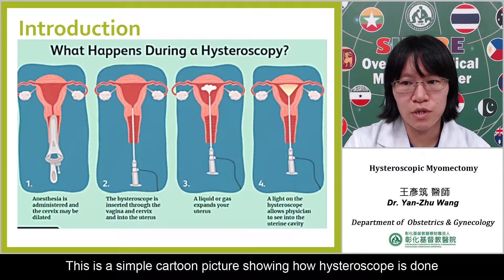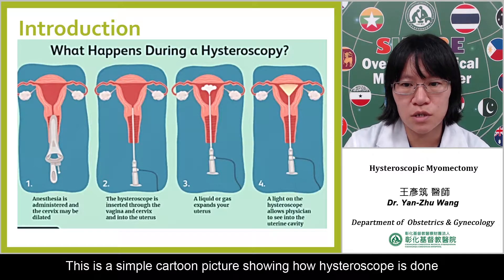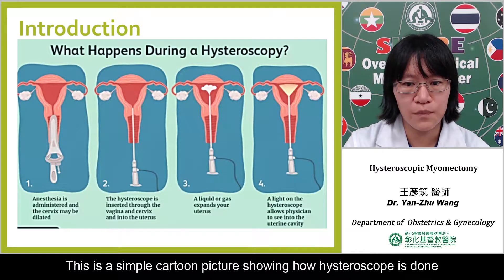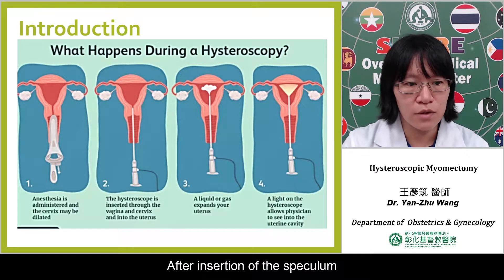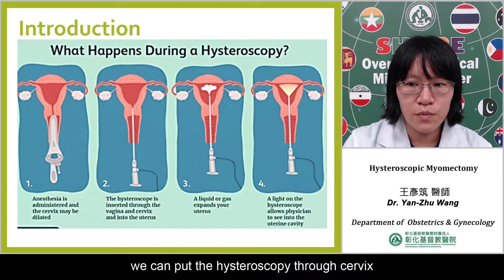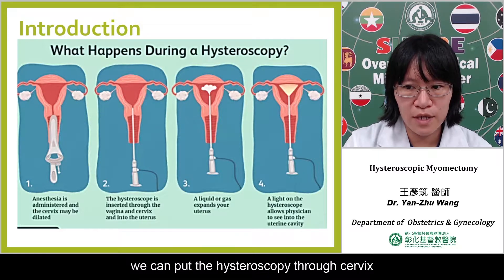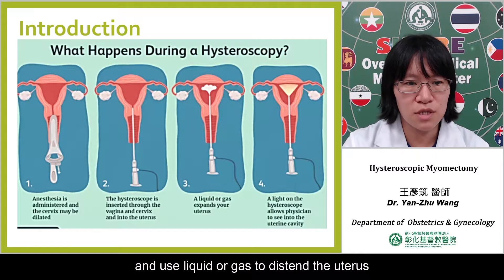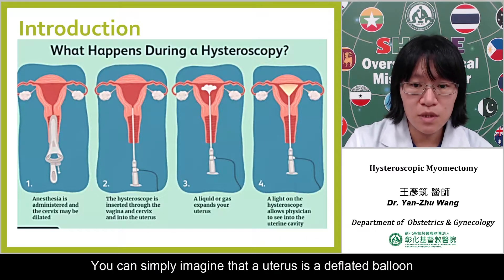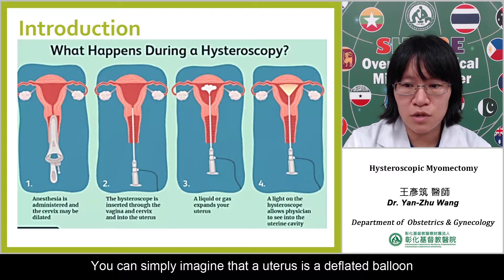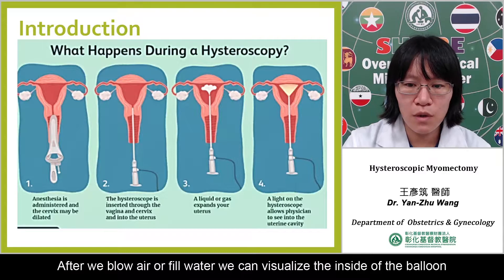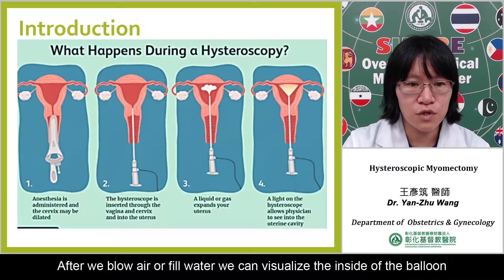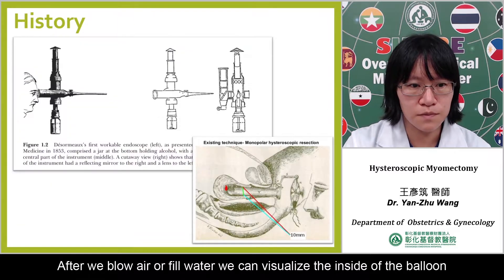This is a simple picture showing how hysteroscopy is done. After insertion of the speculum, we can put the hysteroscopy through the cervix and use liquid or gas to distend the uterus. You can simply imagine that the uterus is a deflated balloon — after we blow air or fill water, we can visualize the inside of the balloon.